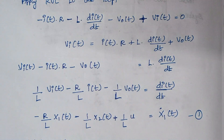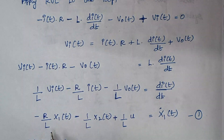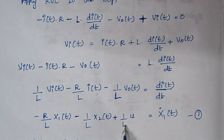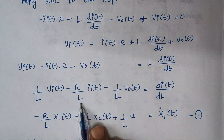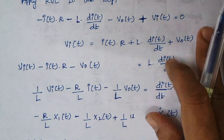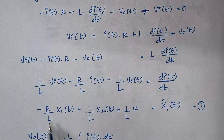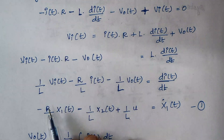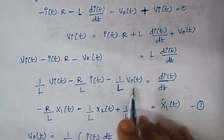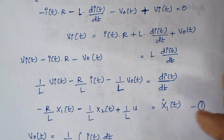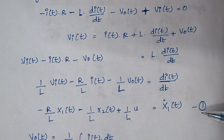We want only dI(t)/dt, so we move L to the denominator. Now replacing terms with state variables: Vi(t) is u, giving +1/L × u. Then −R/L × I(t), where I(t) is x1(t). And −1/L × V0(t), where V0(t) is x2(t). Since we differentiate I(t), it becomes x1_dot. This is equation 1.